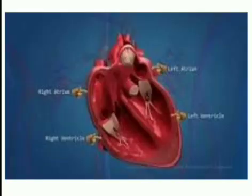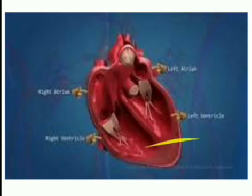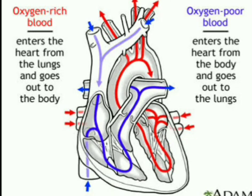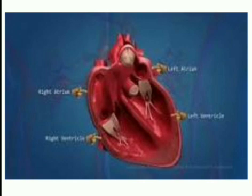The heart is located slightly towards the left in the chest. It is a muscular organ roughly the size of the closed fist of the person. The heart is divided into two equal halves — left half and right half. Each half is divided into two chambers which have a common opening between them, making four chambers in all.